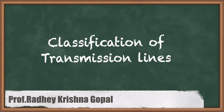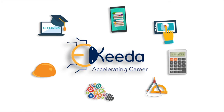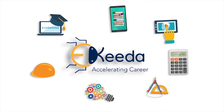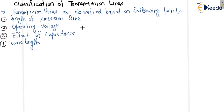Hello friends, now we are going to study classification of transmission lines. Basically, classification of transmission lines is based on the following points: the first one is based on the length of the transmission line, the second one is based on operating voltages, the third is based on the effect of capacitances, and the fourth is based on wavelength.